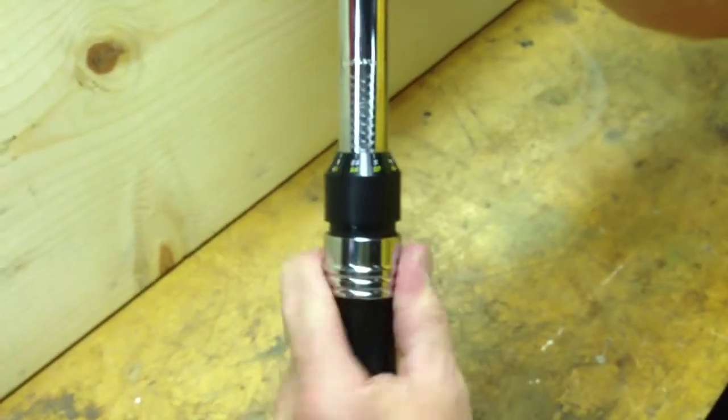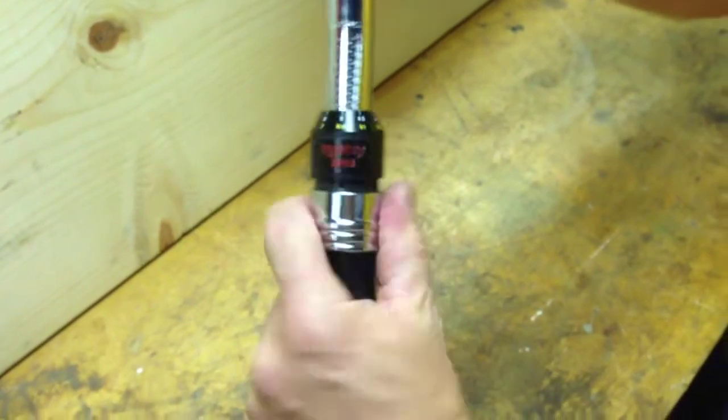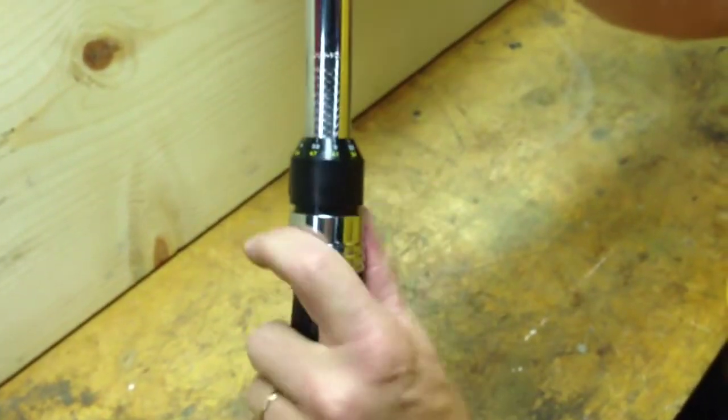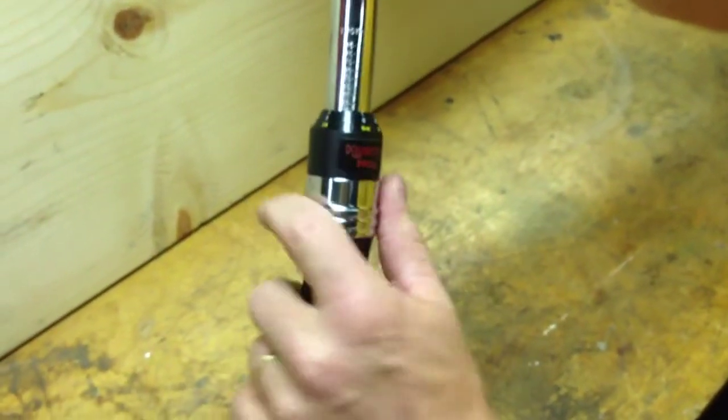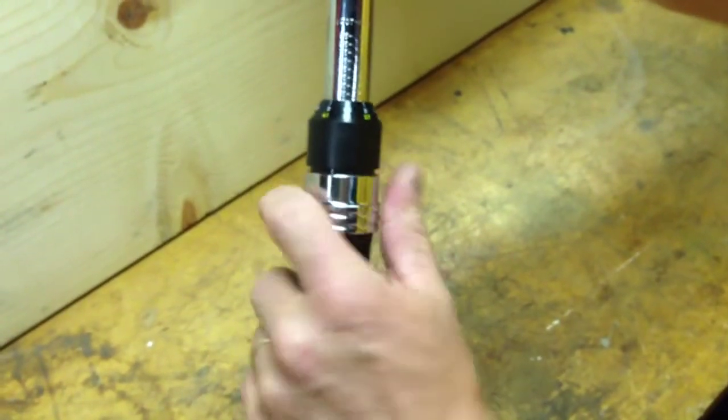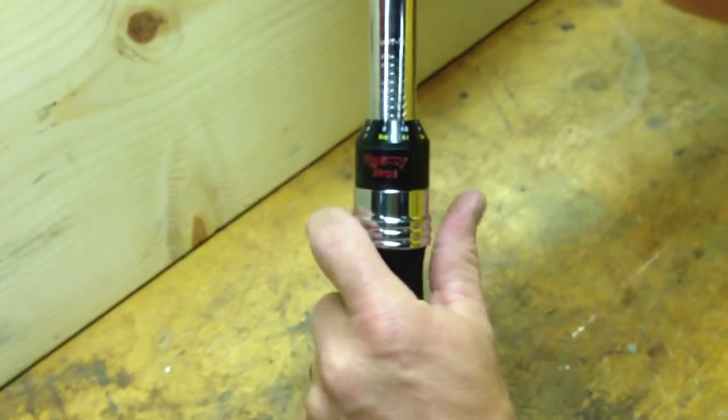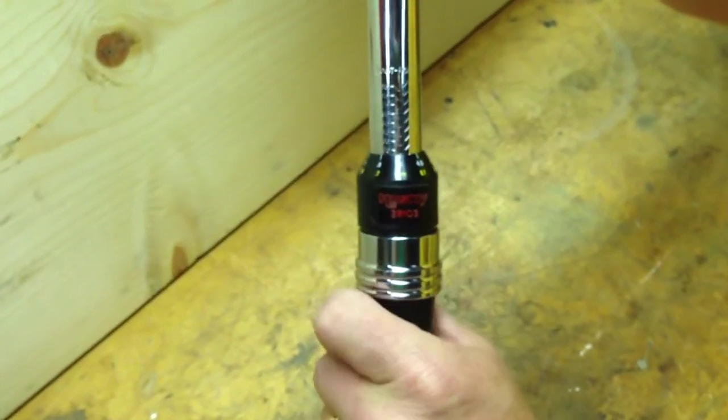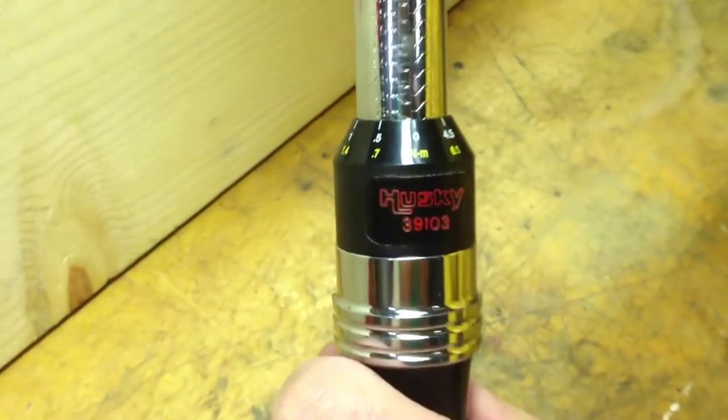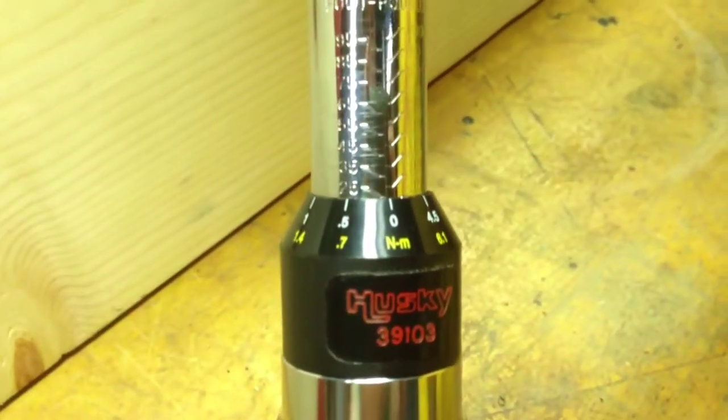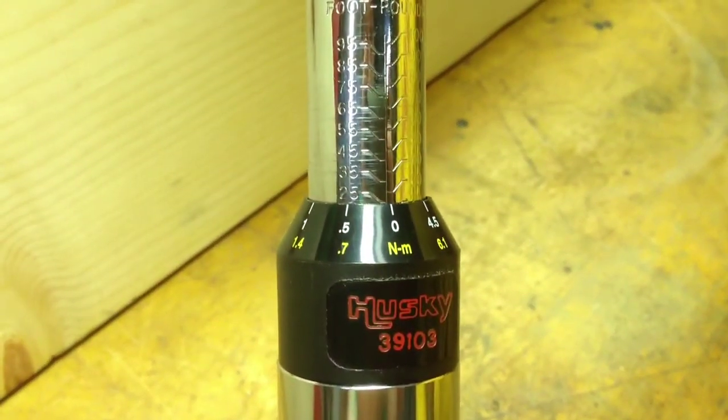So for the first setting, I'm going to set it to 25 foot-pounds of torque. Simply pull the collar down and rotate the handle clockwise. Notice that the collar is spring-loaded, and it snaps back into place to hold it right at the torque setting that you want, so you have to pull down on that. Now we have it set at 25, if you can see right here.